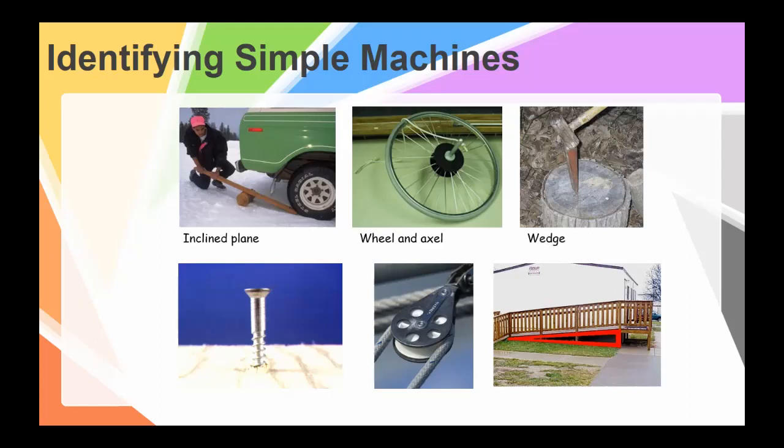The next one, again, pretty straightforward, because it's the name of what we're looking at. This is a screw. We've got a pulley system here. And lastly, we've got another inclined plane as we go up the ramp.